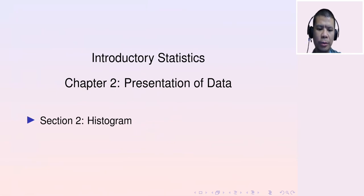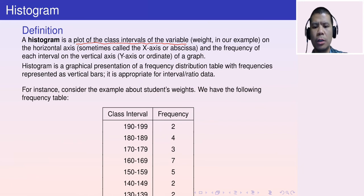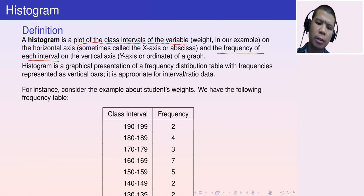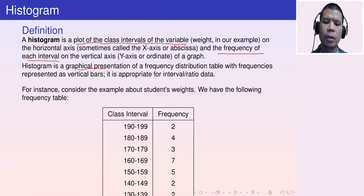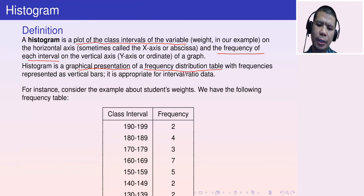We now move on to section two about histograms. By definition, a histogram is a plot of the class intervals of a variable on a horizontal axis against the frequency of each interval on a vertical axis. It is a graphical presentation of a frequency distribution table, with frequencies represented as vertical bars.